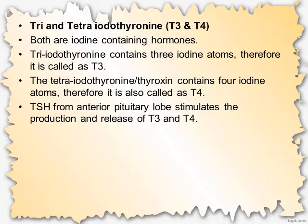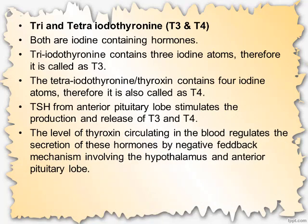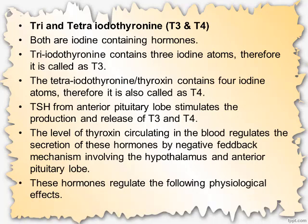Thyroid stimulating hormone, or TSH, from the anterior pituitary lobe stimulates the production and release of both T3 and T4 hormones from the thyroid gland. The level of thyroxine circulating in the blood regulates the secretion of these hormones by a negative feedback mechanism involving the hypothalamus and anterior pituitary lobe.